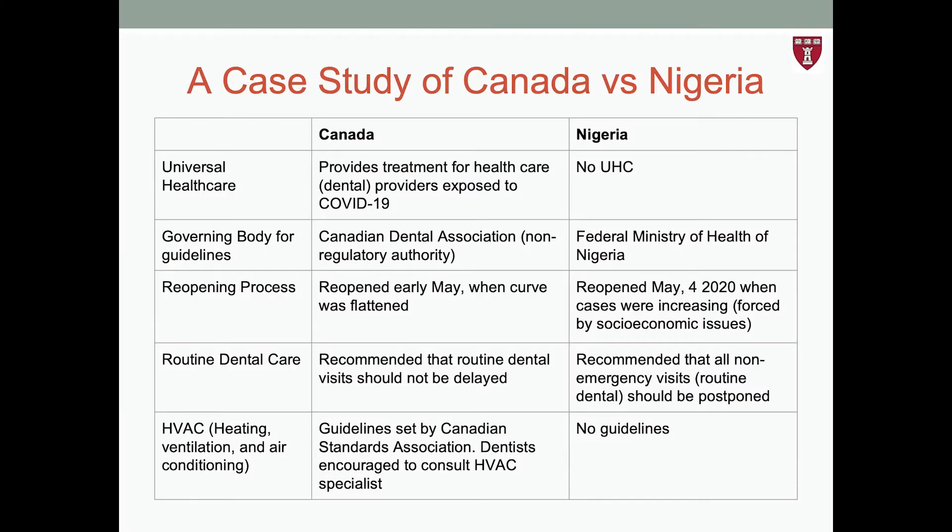Comparing and contrasting is important in the field of global health when examining countries varying in policies, social conditions, economic independence, and healthcare systems. We provide a case study of Canada versus Nigeria as a walkthrough example, but you are welcome to develop your own. While in this example we address universal health care, dental governing bodies, reopening process, redeemed dental care, and air ventilation systems, your students may find other themes or topics to address. Encourage students to compare and contrast countries not covered.